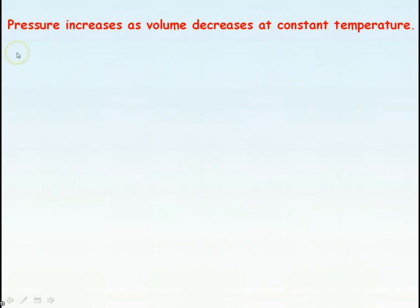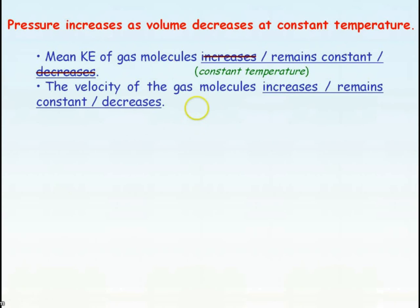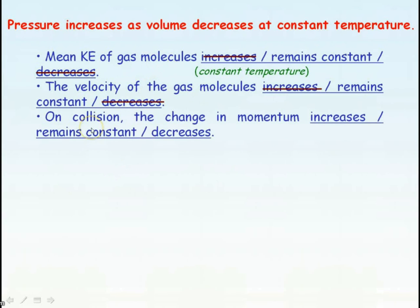We're now going to apply the kinetic theory of gases to explain Boyle's Law — why pressure increases as volume decreases at constant temperature. At constant temperature, temperature is directly proportional to the mean KE of the gas molecules, so the mean KE has remained constant. Therefore, at constant temperature, the velocity of the gas molecules will have remained constant. On a collision the gas molecule makes with the walls of the container, the change in momentum will remain constant because the velocity is constant.